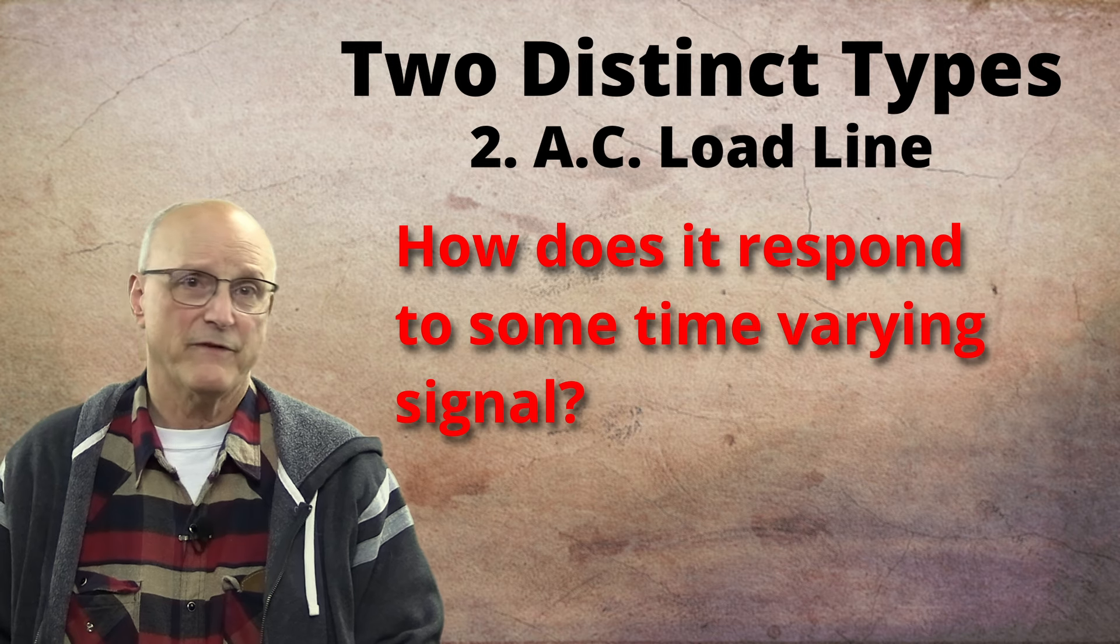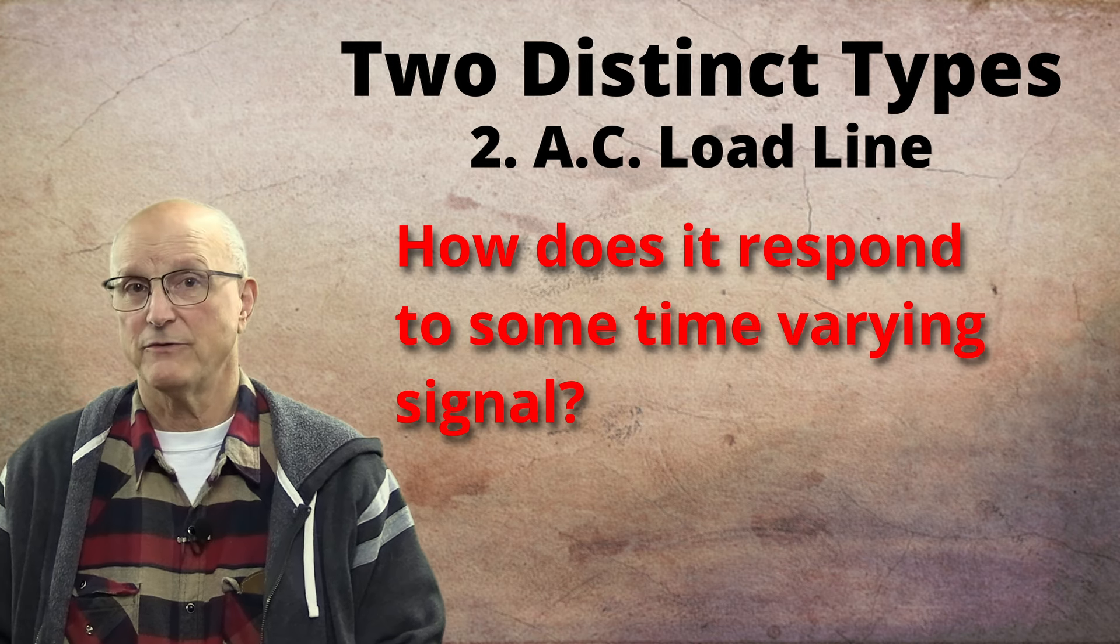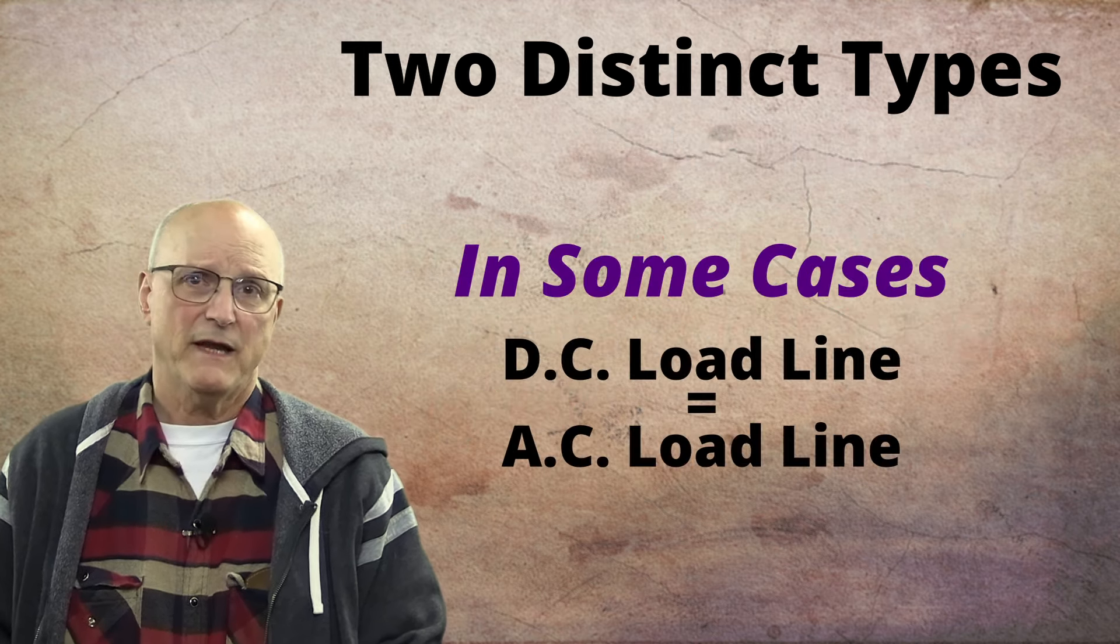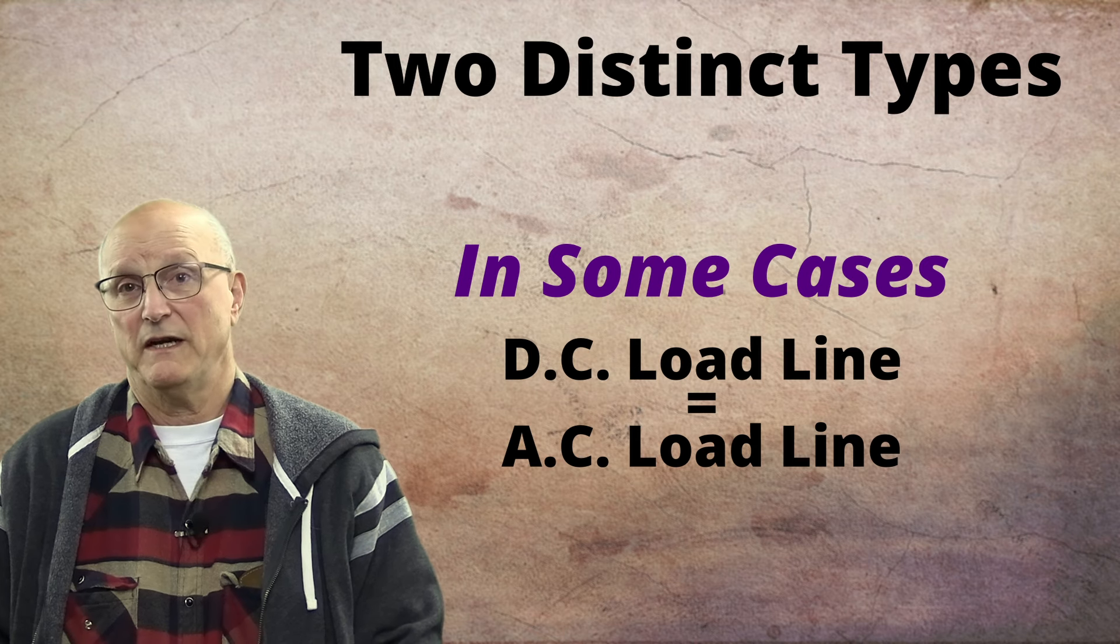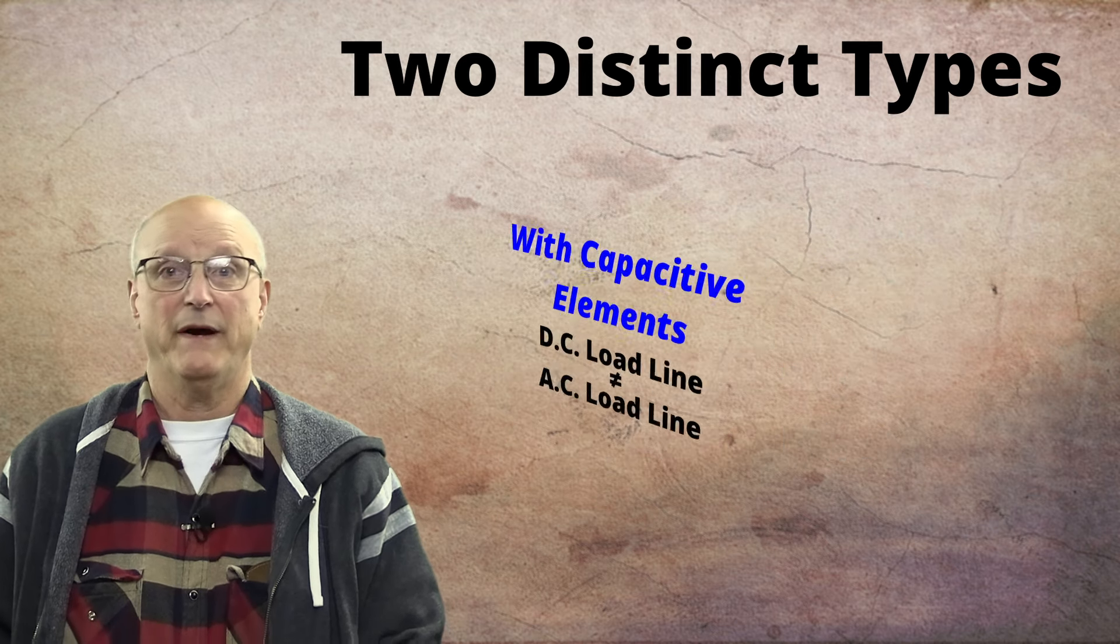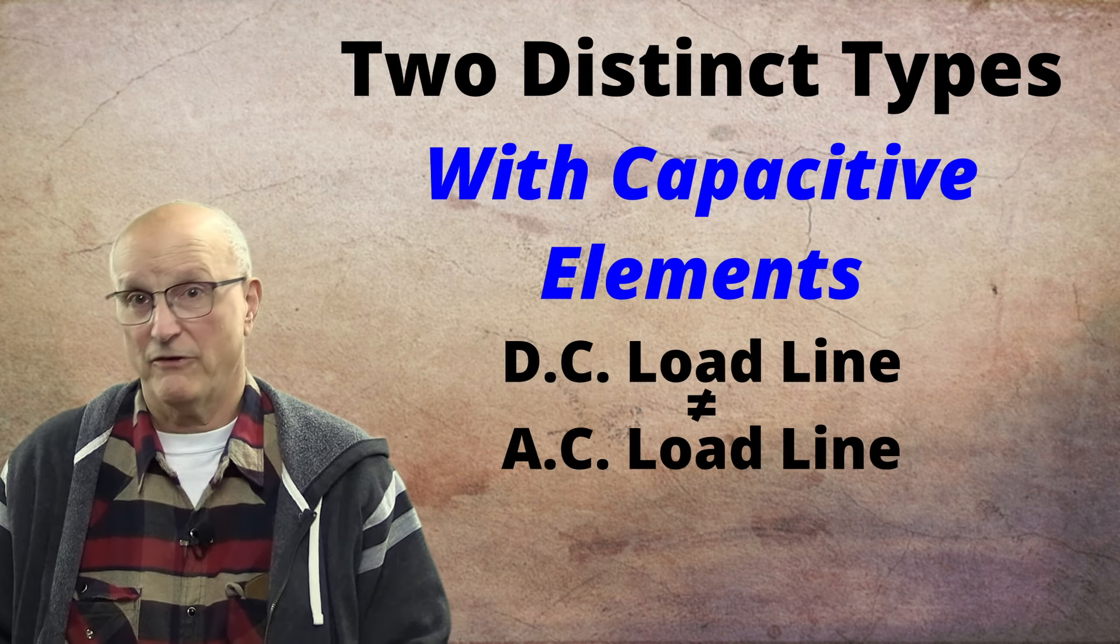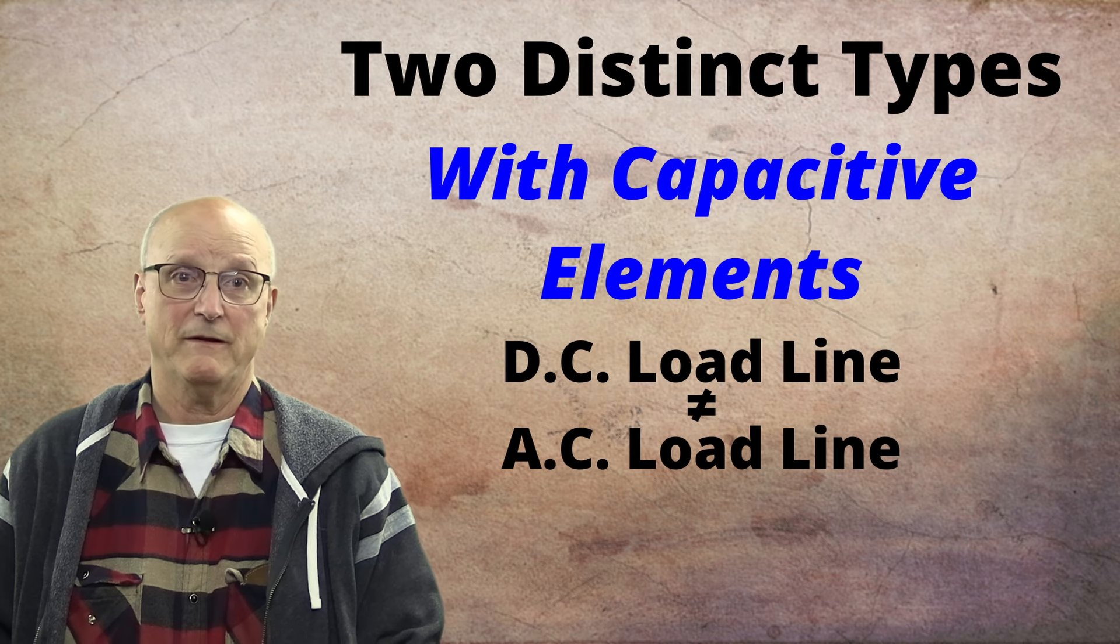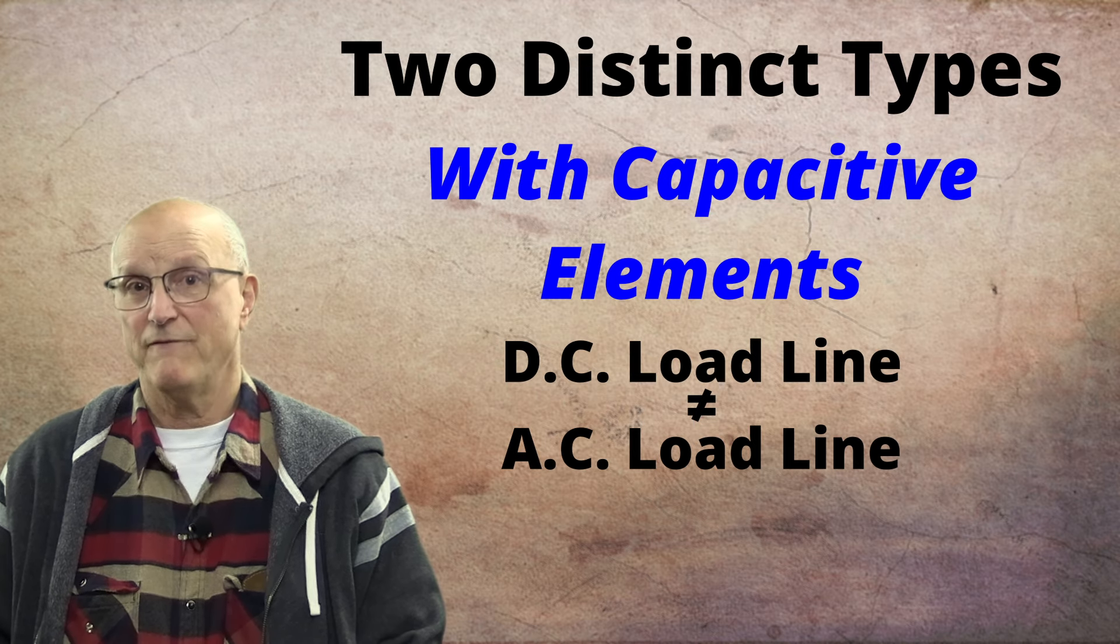And then there is the AC load line. The AC load line helps us see how the transistor circuit responds to some time varying signal being applied to its input. In some cases, the DC load line and the AC load line end up being the same line. But when there are capacitive elements involved with the circuit, then the two lines can be very different. Developing the AC load line takes a few seemingly very strange steps to accomplish.